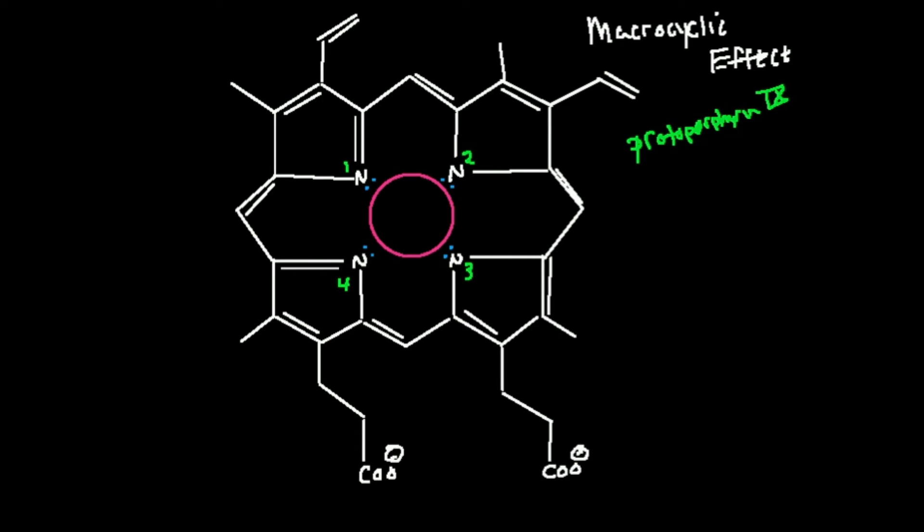With the chelate effect, you can have different ligands that bind to a lot of different metals. But the macrocyclic effect, because generally these structures are very rigid, number one, the interactions with the metal are a lot, a lot more stable than they are in just the simple chelate effect.